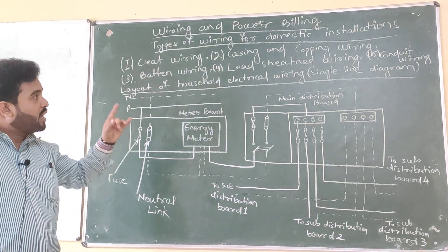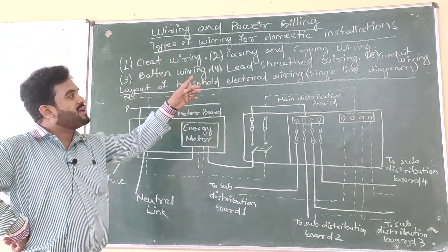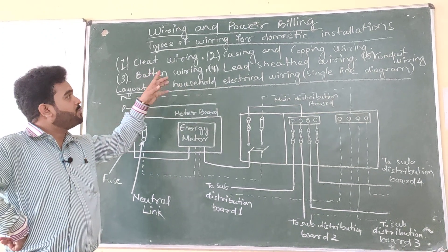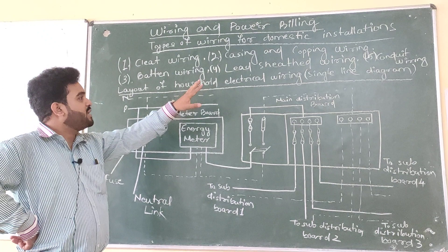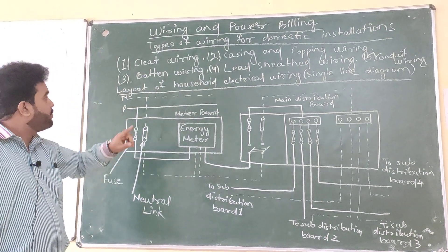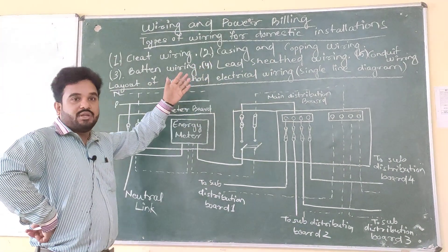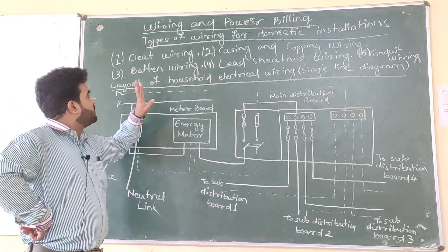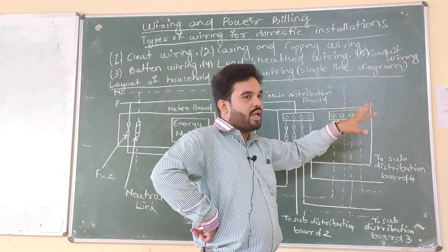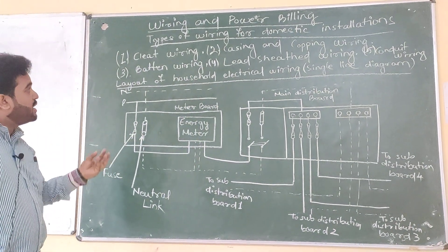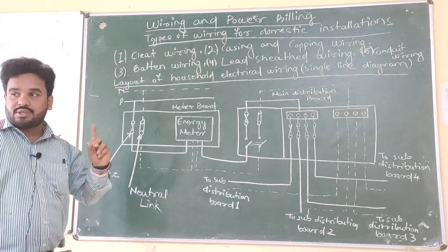There is a problem for power billing which we will solve, and in your semester exam it is a 10-mark question. Before that we will see the types of wiring for domestic installation. In our home, how many types of wiring are we using? Clearly there are five types. First is cleat wiring. Second is casing and capping wiring. Third is batten wiring. Fourth is lead sheathed wiring. Fifth is conduit wiring. Remember these five types — a question will arise: types of wiring for domestic installation.